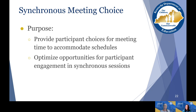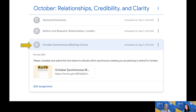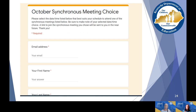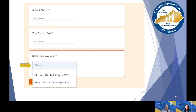To complete the Synchronous Meeting Choice assignment: under each month, click on that month's synchronous meeting choice and you'll see when you expand it a link to a Google form. It's really important that you write down which date and time you selected so you can mark it on your calendar. The choice is at the bottom of that form. For October, for example, you have two choices — a different date and time for each — and you select whichever best fits your schedule.